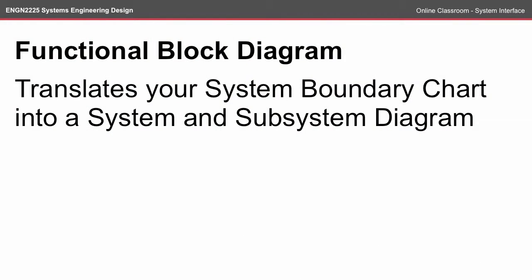The functional block diagram, also known as the system interface, translates your system boundary chart that we did in the previous episode of The Online Classroom into a system and subsystem diagram. This allows for easy identification of the different entities and the relationships between them in your system.